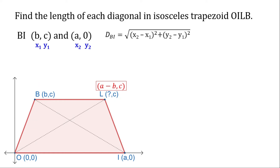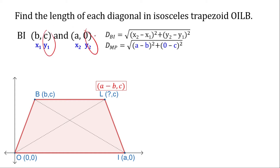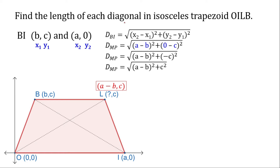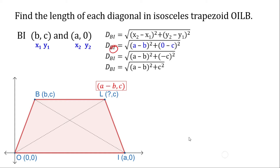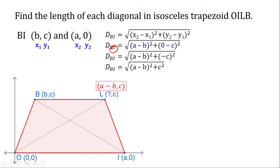Let's find the length of BI. We substitute x₂ and x₁: that is A minus B. Then y₂ minus y₁ is 0 minus C in the distance formula. Simplifying further, since squaring negative C gives C squared, we get the distance of BI.